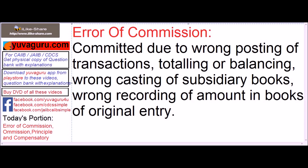What is Commission Error? It is committed due to wrong posting of transactions, totaling or balancing, wrong casting of subsidiary books, or wrong recording of amount in books of original entry. Basically, it is an error which happens in a normal course of business due to wrong recording or writing wrong figures.